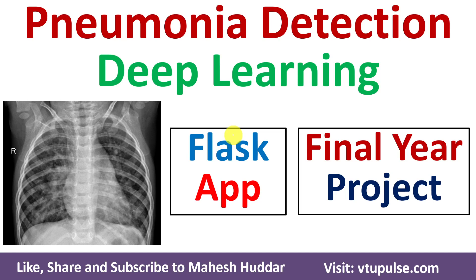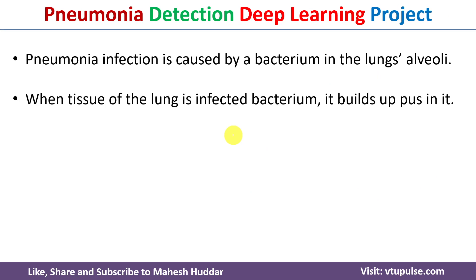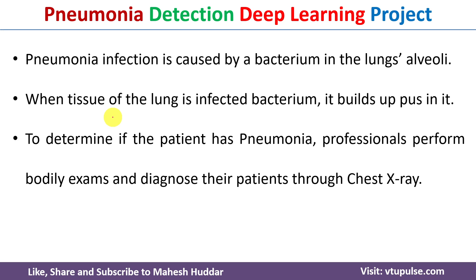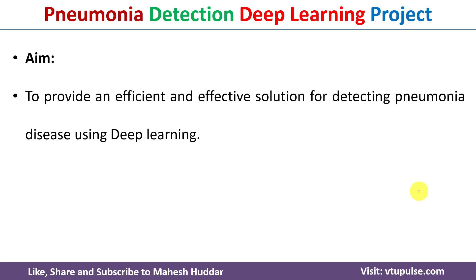Welcome back. In this video I will demonstrate a pneumonia detection project built using deep learning techniques. The frontend is designed using the Flask library. Pneumonia infection is caused by bacteria in the lungs — when tissue of a lung is infected by bacteria, it builds up pus. To determine if a patient has pneumonia, professionals perform bodily exams and diagnose patients through chest X-rays. The aim of this project is to provide an efficient and effective solution for detecting pneumonia using deep learning techniques.